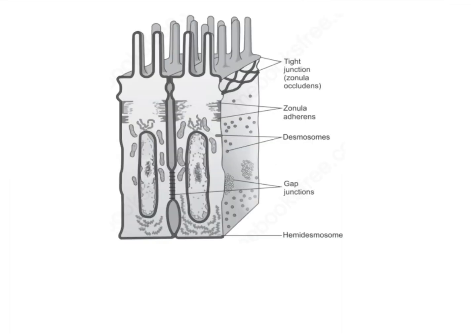If we look at this particular figure, we should understand that there are two types of junctions to remember. One is the junctions that fasten the cells to one another and to the surrounding tissue, and the other junctions are those that permit transfer of ions and other molecules from one cell to another.